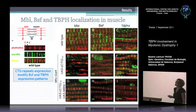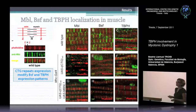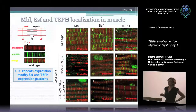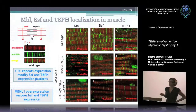In the case of TBPH, we obtained a rescue by MBNL1 expression — TBPH was again only detectable in Z bands, although expression in nuclei was still higher. We concluded that CTG repeats were able to modify BSF and TBPH expression patterns, and moreover that MBNL overexpression was able to rescue these expression patterns.